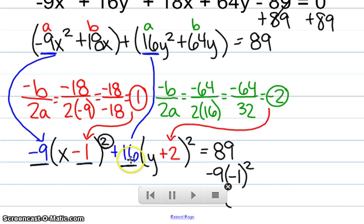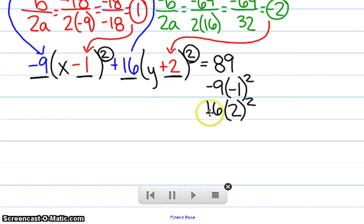We're going to do the same thing with the y. We've got the 16, it's going to be squared, times our 2. When we go through, negative 9 times the negative 1 squared gives us negative 9. And then, our 2 squared times 16 should give us 64.